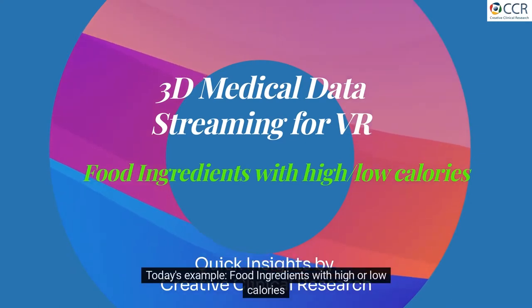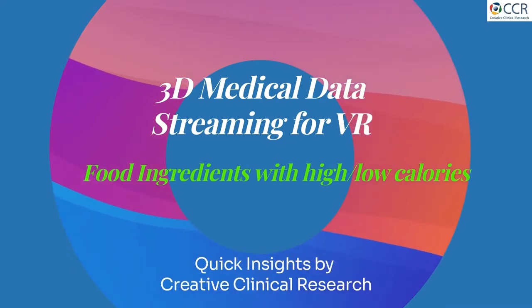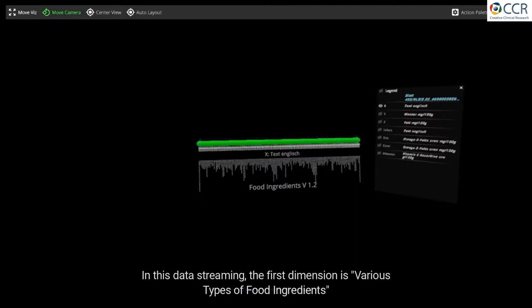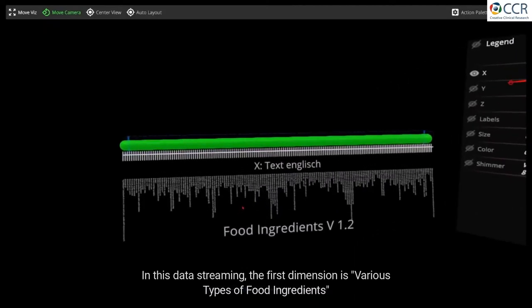Today's example: food ingredients with high or low calories. In this data streaming, the first dimension is various types of food ingredients.